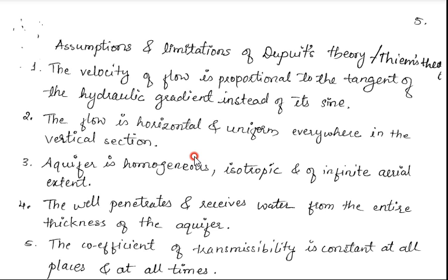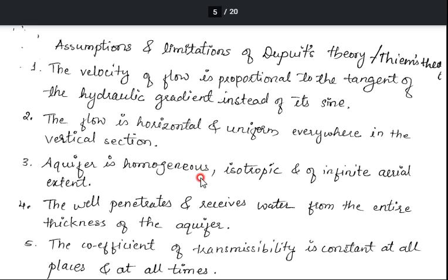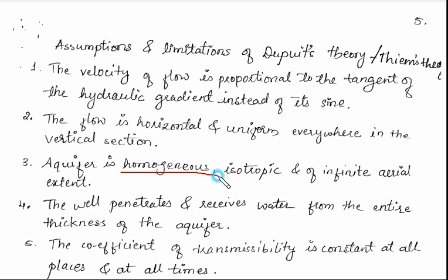The second assumption is that the flow is horizontal and it is uniform everywhere in the vertical section — that is, the flow is uniform throughout the aquifer. The third assumption is that the aquifer is homogeneous, meaning it is made up of similar material, and it is also isotropic and of infinite aerial extent.